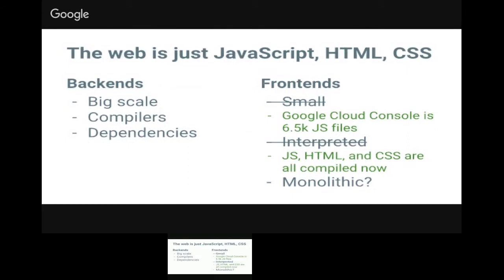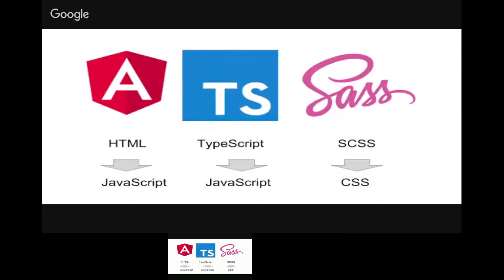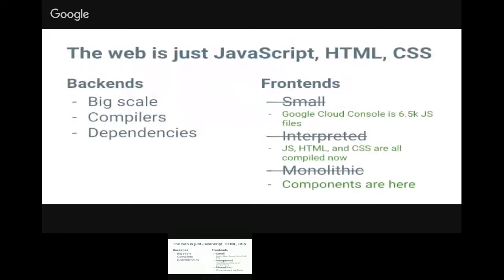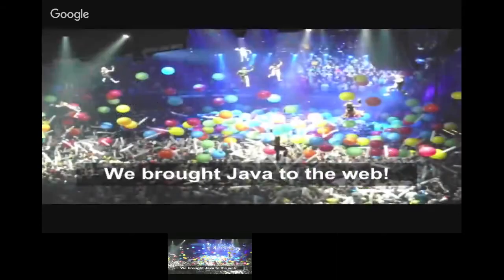It's not all interpreted anymore — we have compilers for JavaScript, HTML, and CSS. Angular has a compiler that takes HTML and turns it into JavaScript. The TypeScript compiler turns TypeScript into JavaScript. There are several compilers for CSS preprocessed languages. Web Components is a standard now, and Angular has its own component system. So we have basically all the same problems. The celebration is we brought Java to the web — after so much promise, we have all of this complexity.